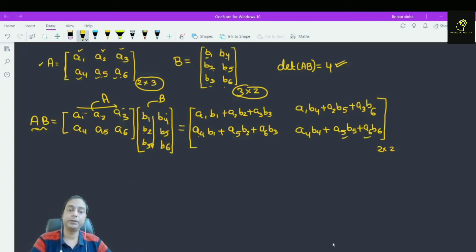Now, this is determinant of AB is 4. Now, what is matrix B into A? I am going to calculate matrix BA.